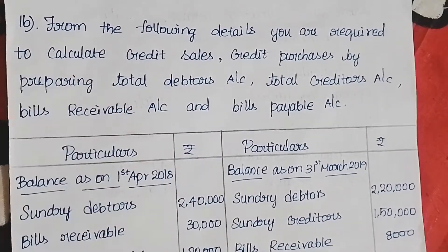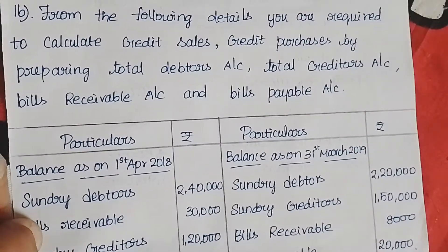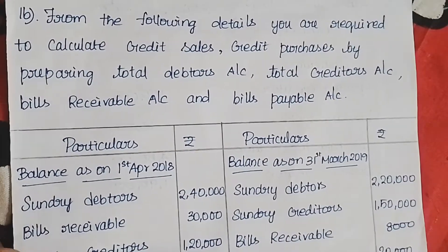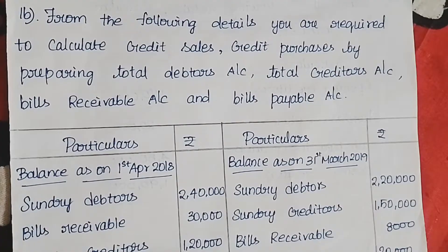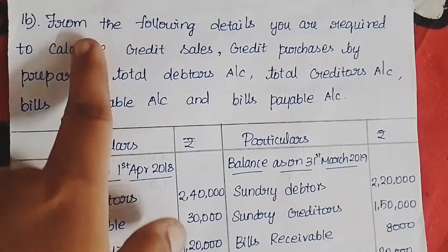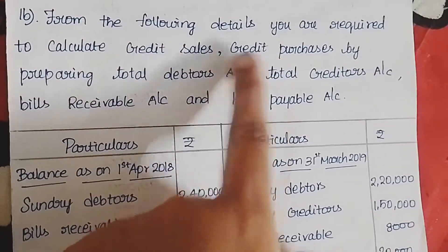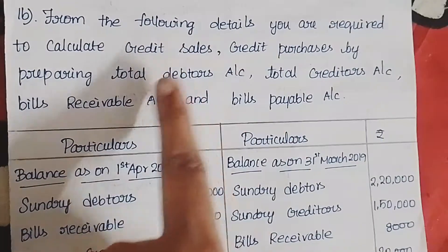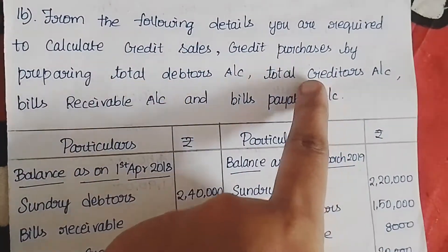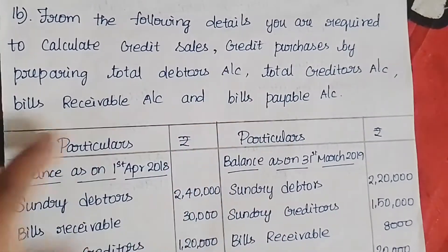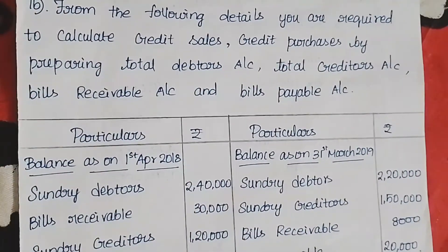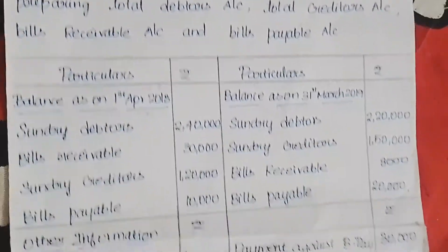From the following details, you are required to calculate credit sales and credit purchase by preparing total debtors and total creditors account, bills receivable account and bills payable account. We need to find credit sales and credit purchase. For this, we will see total debtors, total creditors, bills receivable and bills payable. Now let's get into the video.